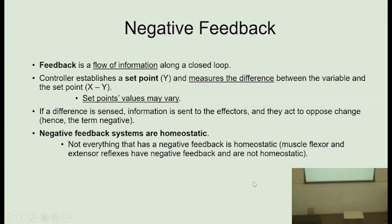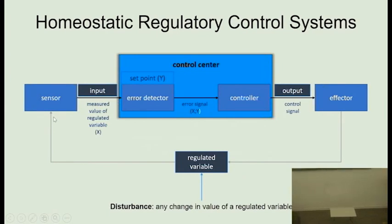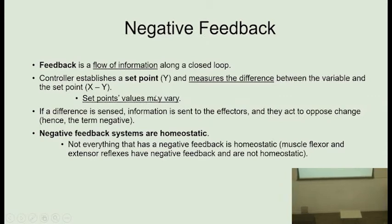Most of these mechanisms are negative feedback loops — the only homeostatic way of regulating the body. The feedback is a flow of information along a closed loop. Remember that set points may vary in different situations: fever is an example. Also, variations in hormone levels during the menstrual cycle or during the day — cortisol, for example, is very high when we wake up and very low at the end of the day. These are daily or monthly cycles.